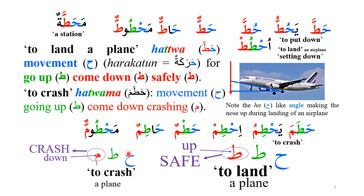If you change the last letter to hatama, it means to crash or pressure something — hatama yahtim. Here you can see that hatwa indicates movement going up and coming down safely, while hatama indicates going up safely but coming down crashing, because of the downward-pointing tail of the meem. Letters with a downward-pointing tail carry a bad meaning — for example meem, ra, sheen, and dua — which I'll discuss in a separate video.